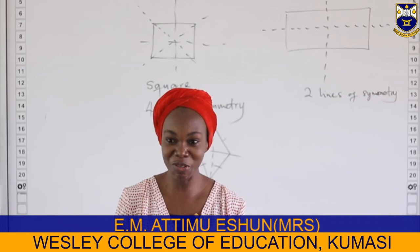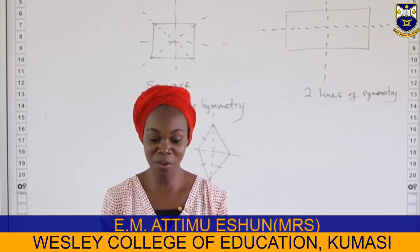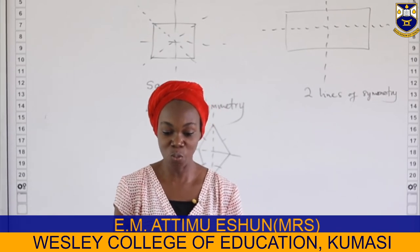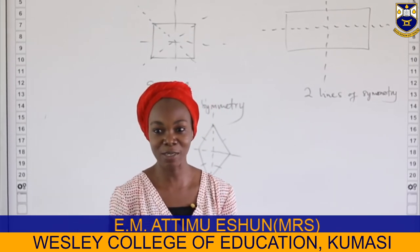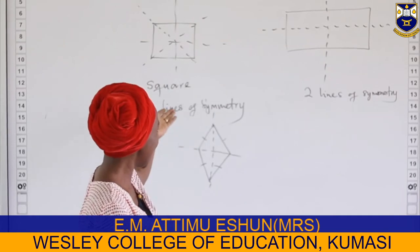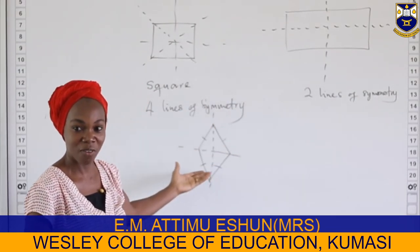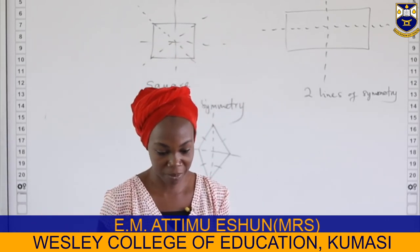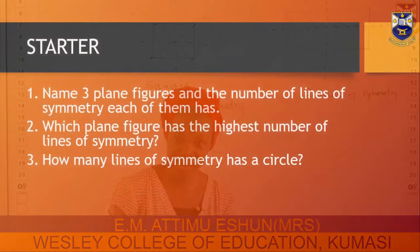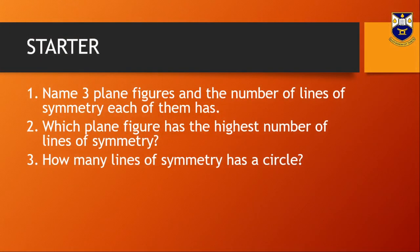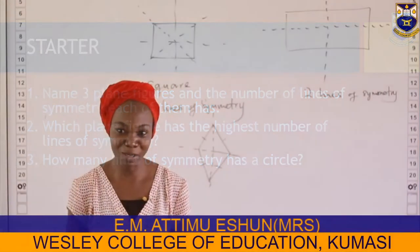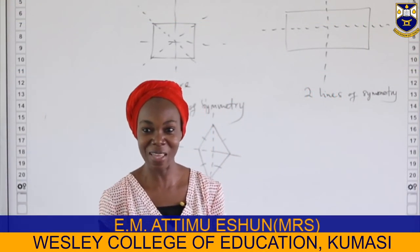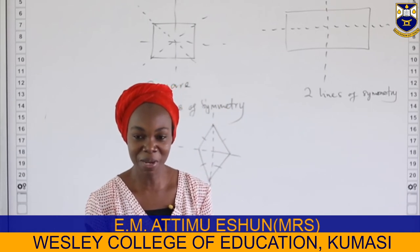You name three plane figures too and give us the lines of symmetry each of them has. When you are done, tell us which of them has the highest number of lines of symmetry. In my case, the square has the highest with four lines of symmetry. My next question is: how many lines of symmetry does a circle have? That is yours to answer, in addition to your named plane figures.